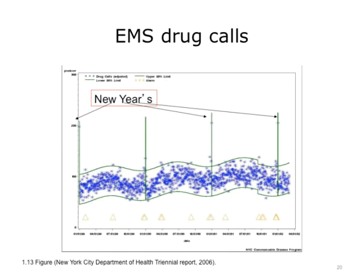This slide shows the benefit of monitoring emergency room drug calls over time. There are three peaks in emergency room calls for drug overdoses, and each peak occurs right at New Year's Eve. These data provide evidence that New Year's Eve leads to an increase in drug use and overdose. Public health officials with this data can justify, for example, a mass media campaign to warn the public about drug use, armed with evidence rather than anecdotes to justify actions that could potentially save lives.